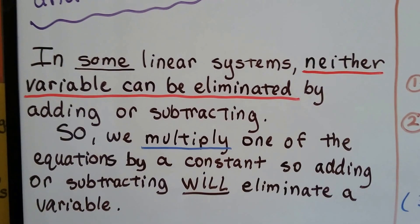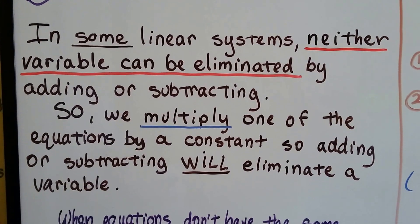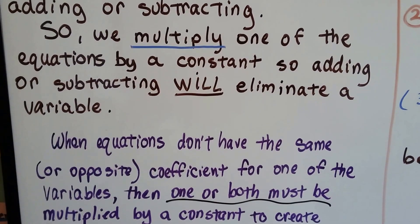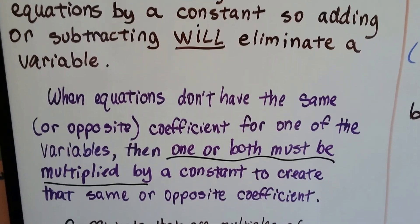In some linear systems, neither variable can be eliminated by adding or subtracting. So we multiply one of the equations by a constant, so adding or subtracting will eliminate a variable.